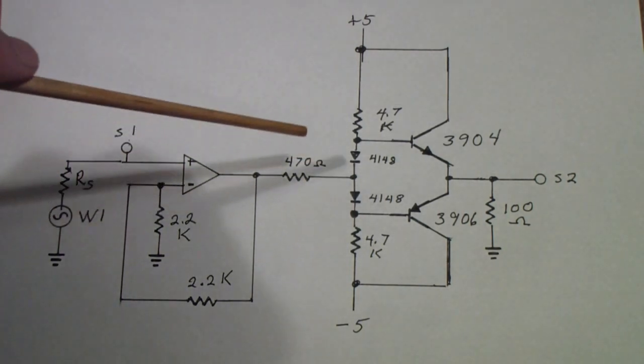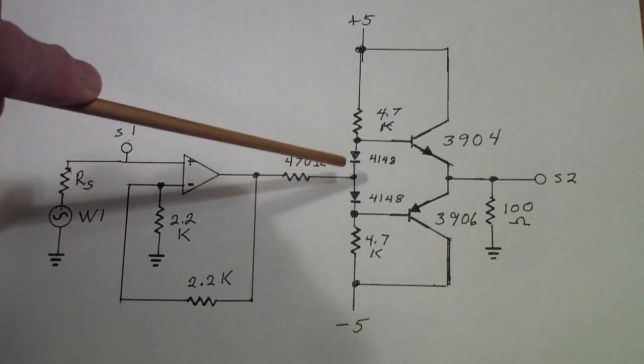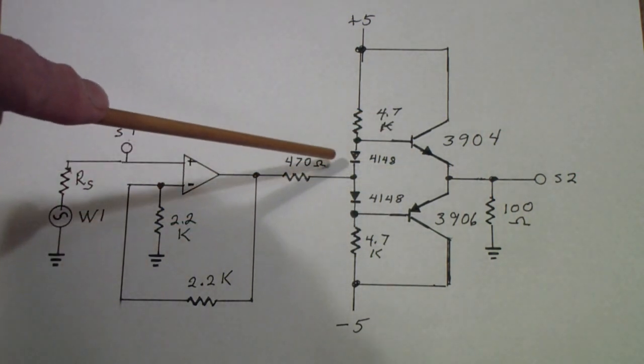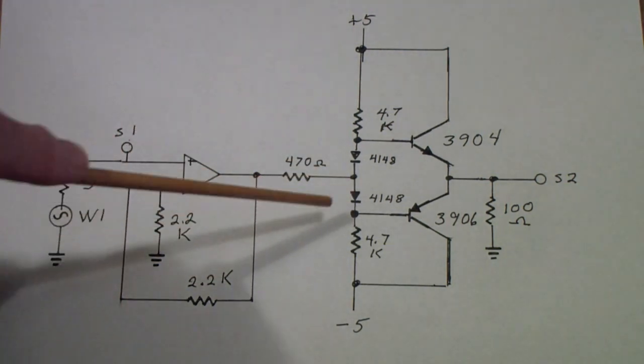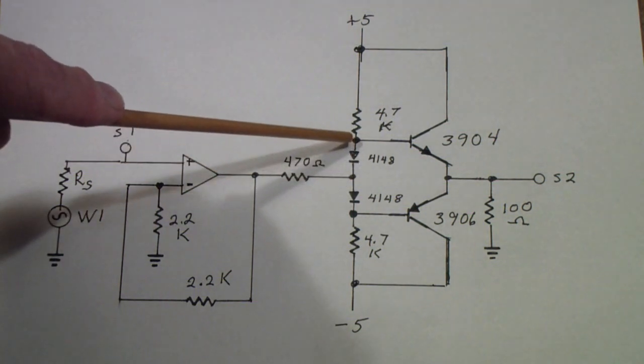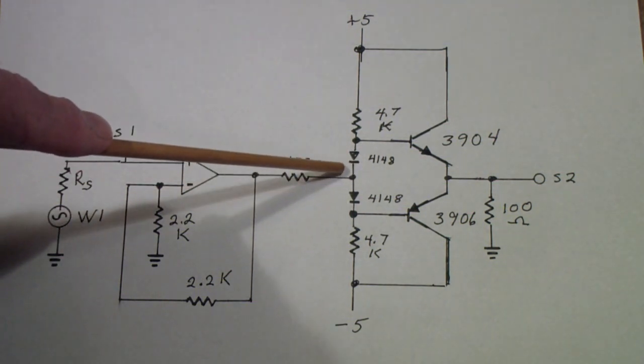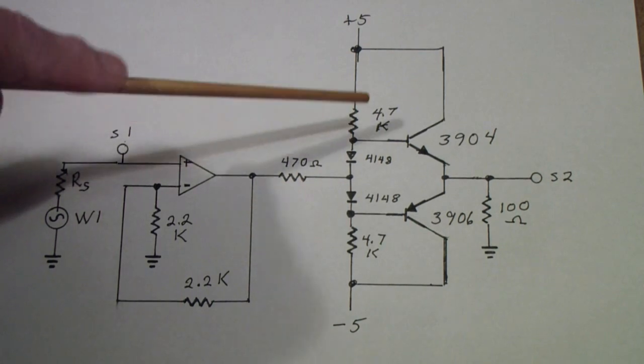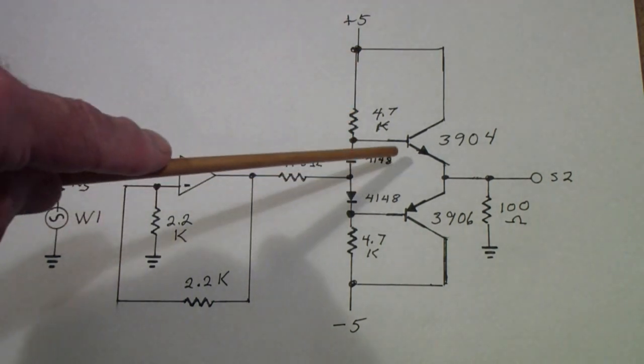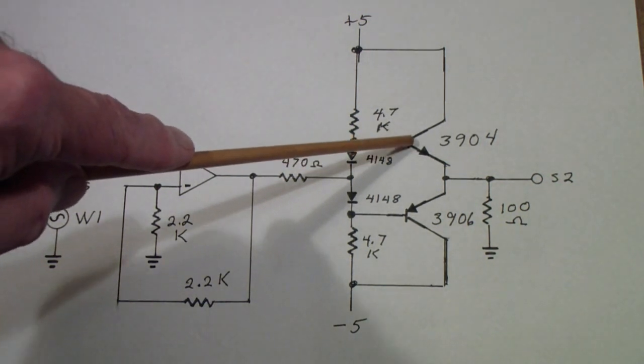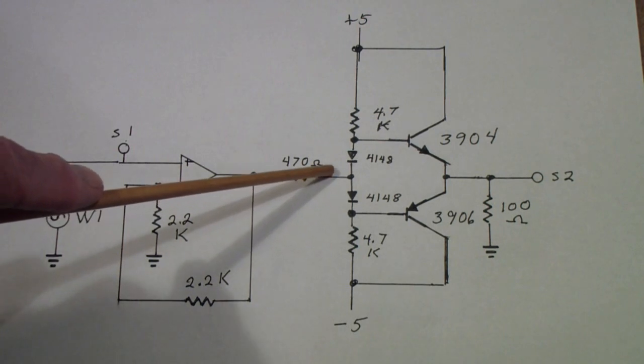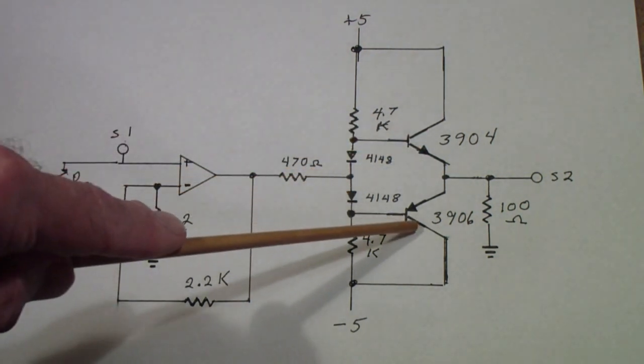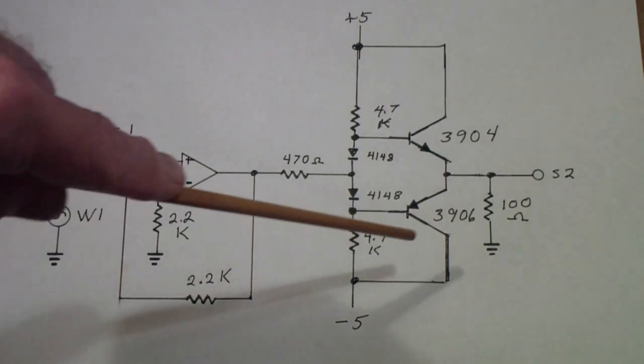The diodes are put in there because if you simply used the input to these bases without the diodes, the base would have to rise about 6 or 7 tenths of a volt above zero in order to turn on this transistor. So as the signal went cross to zero, say going from negative to positive, it would have to go about 0.6 or 0.7 volts positive before it would turn on this transistor. That's about a 1.5 volt gap and that will cause severe distortion in the output.